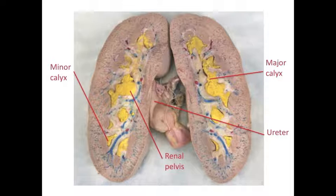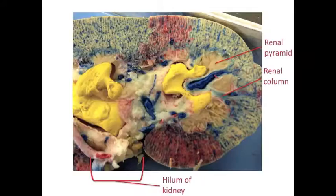Together, these come together in a single structure called the renal pelvis, before draining into the ureter. The renal columns house the vasculature elements that allow arterial blood flow towards the cortex and venous blood flow away from the cortex. The renal pyramids house the collecting ducts, which permit the movement of filtrate from the glomeruli to the minor calyces.